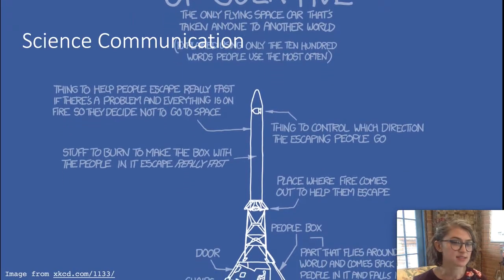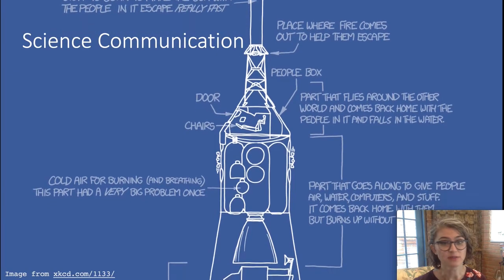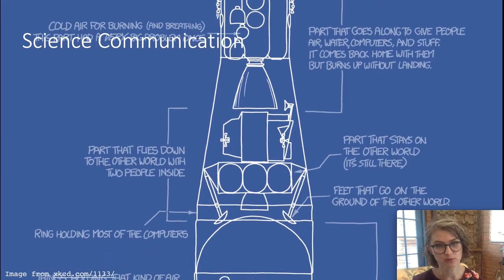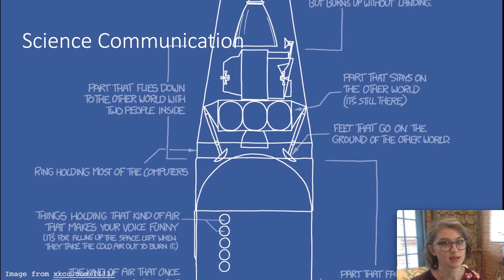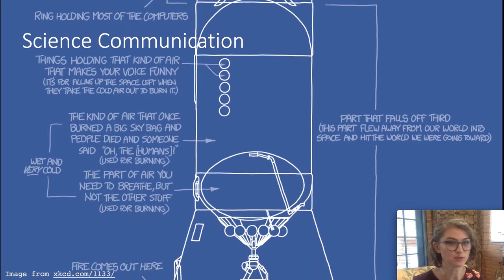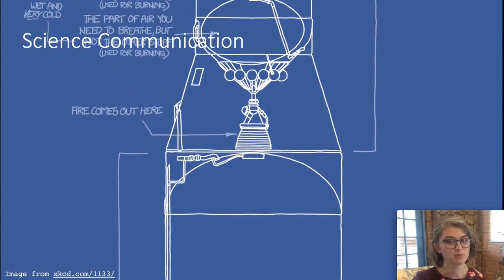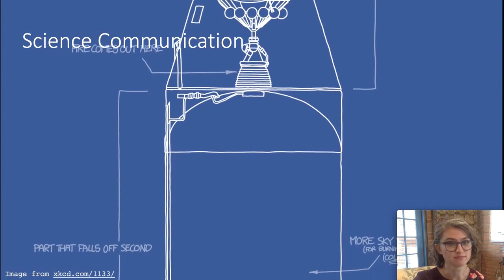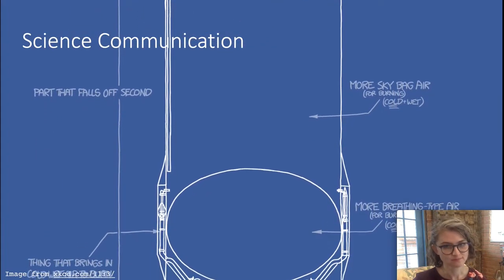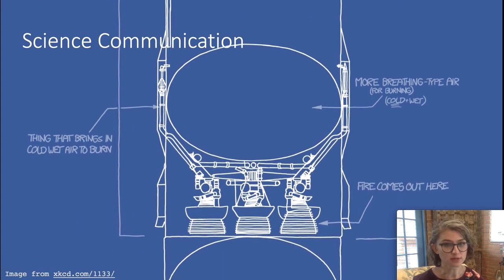Here's a comic by XKCD that makes fun of the jargon of rocket science by simplifying a diagram of a rocket to descriptions using only the ten hundred most common words in the English language. I say ten hundred instead of thousand because turns out the word thousand isn't one of the most commonly used words in the English language. It can be tempting to think that people who don't understand our jargon don't understand it because they're stupid. That's not true. People's expertise lies in different places. No one is an expert at everything.